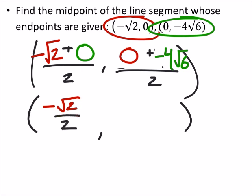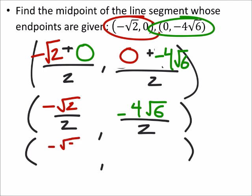And then I've got this negative 4 square root of 6 over 2, because that's 0 minus 4 times the square root of 6. But the second value, the y value, I can simplify that.